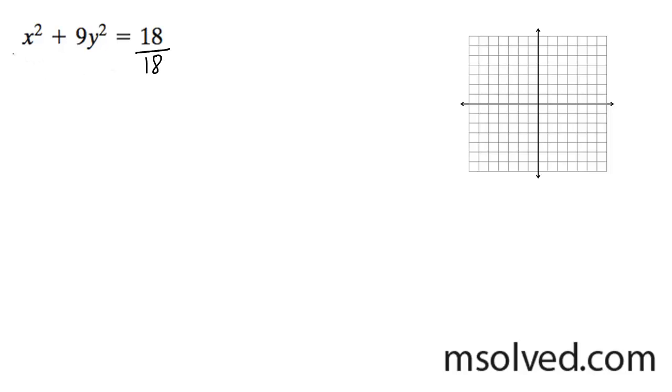I need to get 1 over here, so I divide through by 18. And so I end up with x squared over 18 plus y squared over 2 is equal to 1.